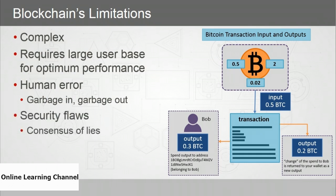There are security flaws — specifically what I call the consensus of lies, also known as the 51% problem. A blockchain network adds blocks when a simple majority of 51% is reached. It's been postulated that a blockchain network could be attacked by bots — enough bots to have a 51% majority — allowing the blockchain to be taken over to favor bad actors. It's important to note this hasn't happened and is only theoretical, but it is worth considering.